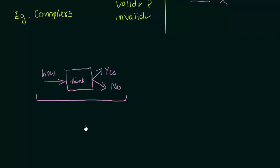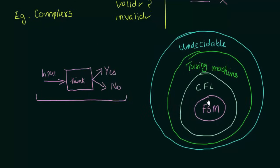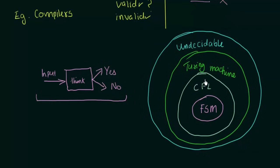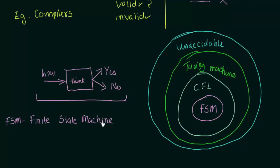Now let us see what are the layers or levels in this subject. I will show you a diagram here showing the layers or levels. In the first layer we have FSM, which stands for Finite State Machine. FSM is one of the simplest models of computation. It has a very limited amount of memory and can perform very low-level computations and calculations. This is the basic building block of this subject and the first thing we will be learning. We will be starting with FSM in the following lectures from the very basics.